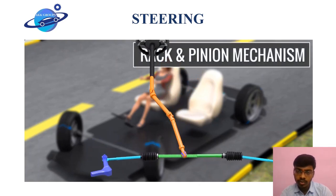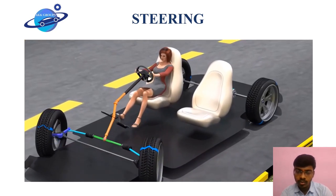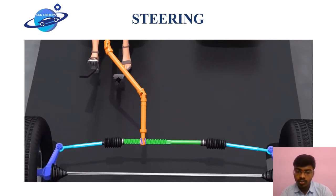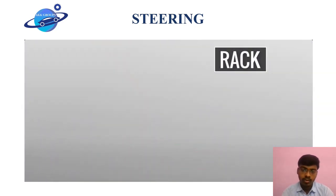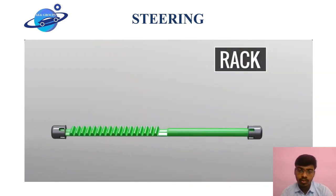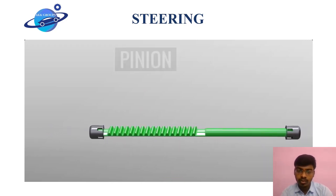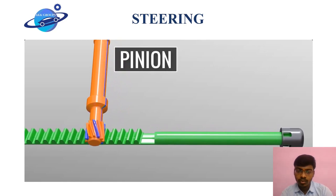Let's see how the rack and pinion mechanism steers the vehicle. A rack is at the center of this mechanism and is constrained so that it can only move in a straight line. The pinion, which comes from the steering column, makes this rack move.